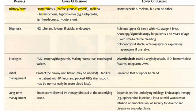Melena will be greater than hematochezia. The patient will be hypovolemic with tachycardia, lightheadedness, and hypotension — BP will be low. In the case of lower GI bleed, hematochezia will be greater than melena, but it can be either.